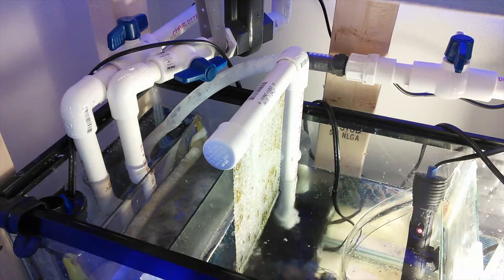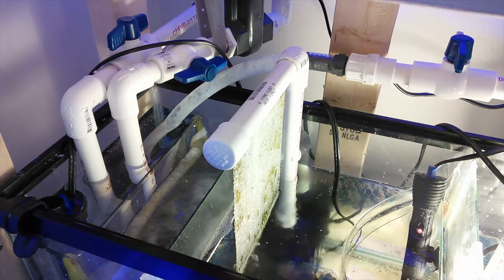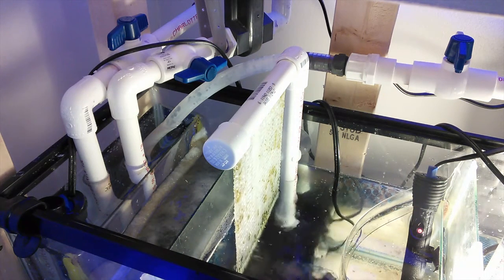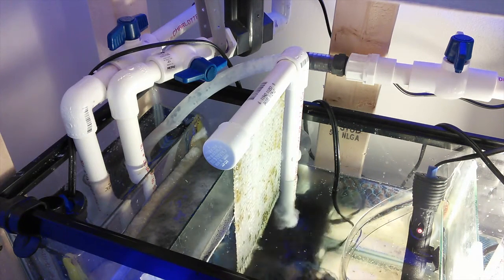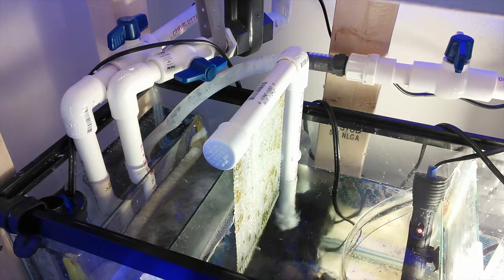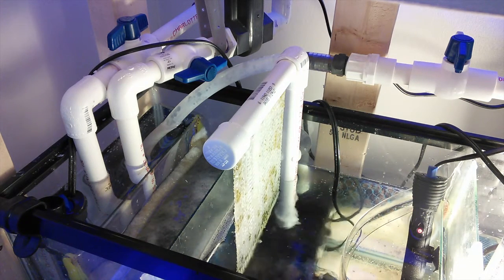After you cut the pipe to the lengths that will work for your system, assembling the unit is pretty straightforward. I did not cement the PVC joints. I use a 185 gallon per hour pump, and the dry fitted joints have been holding up just fine for the past three months.